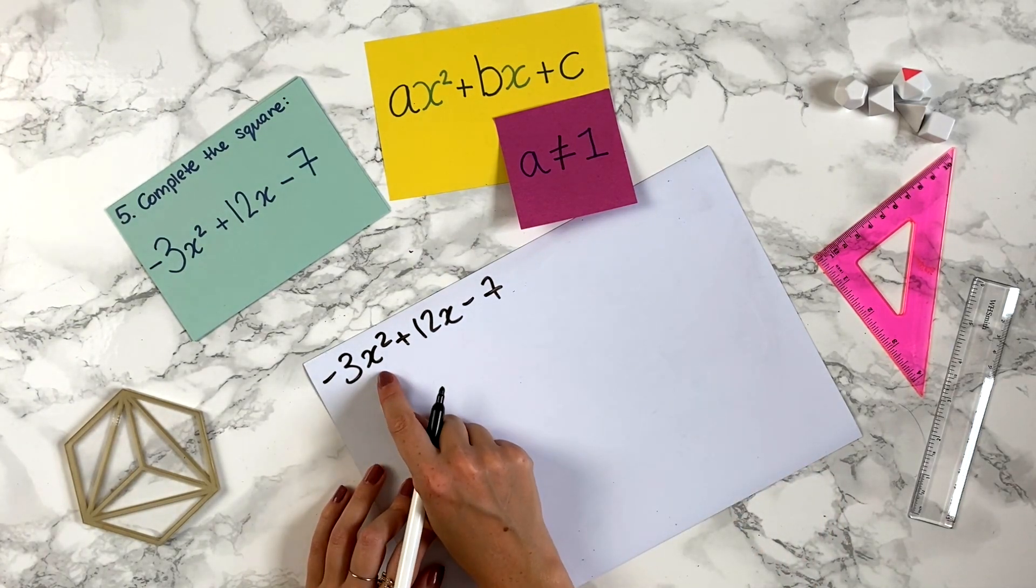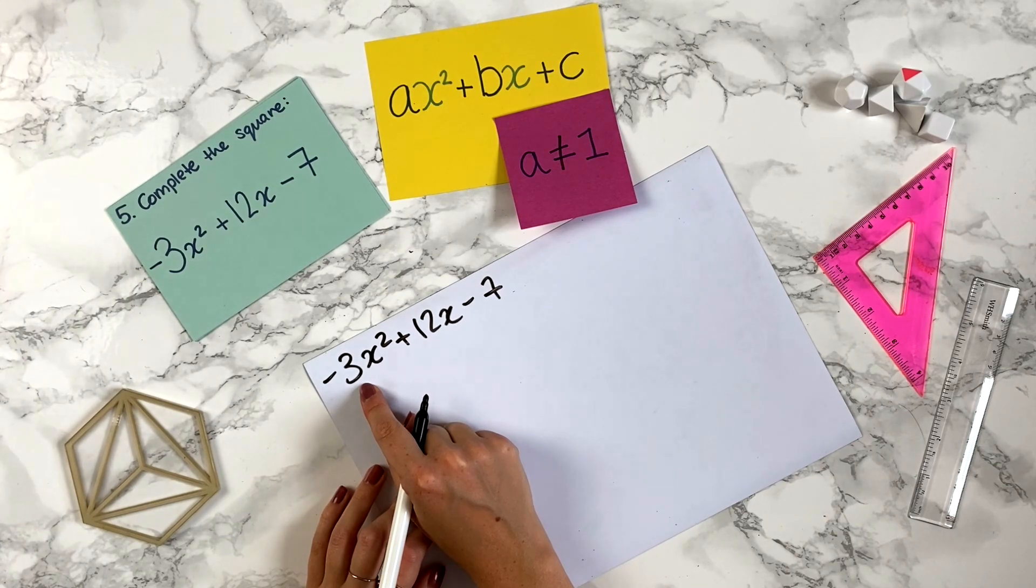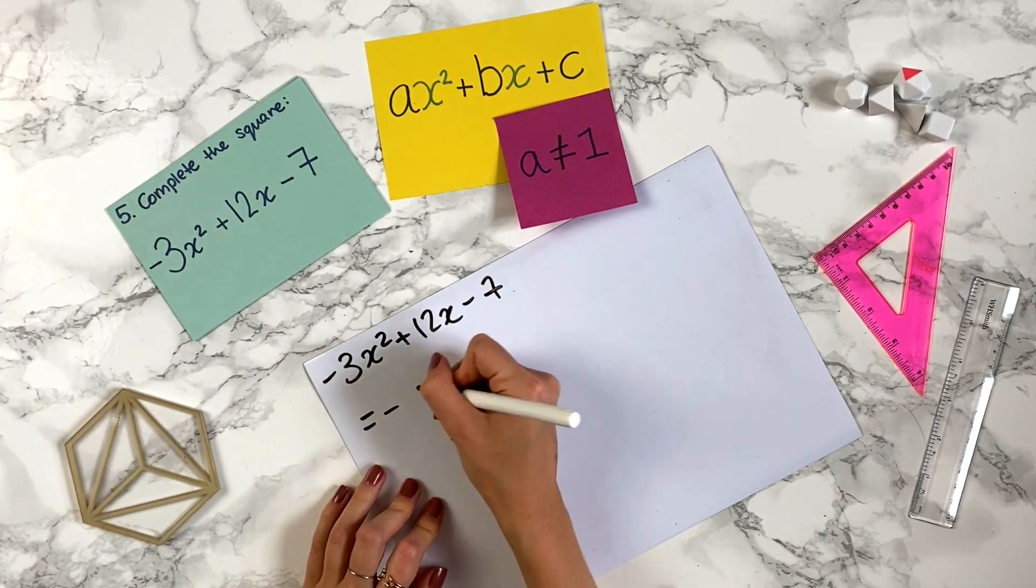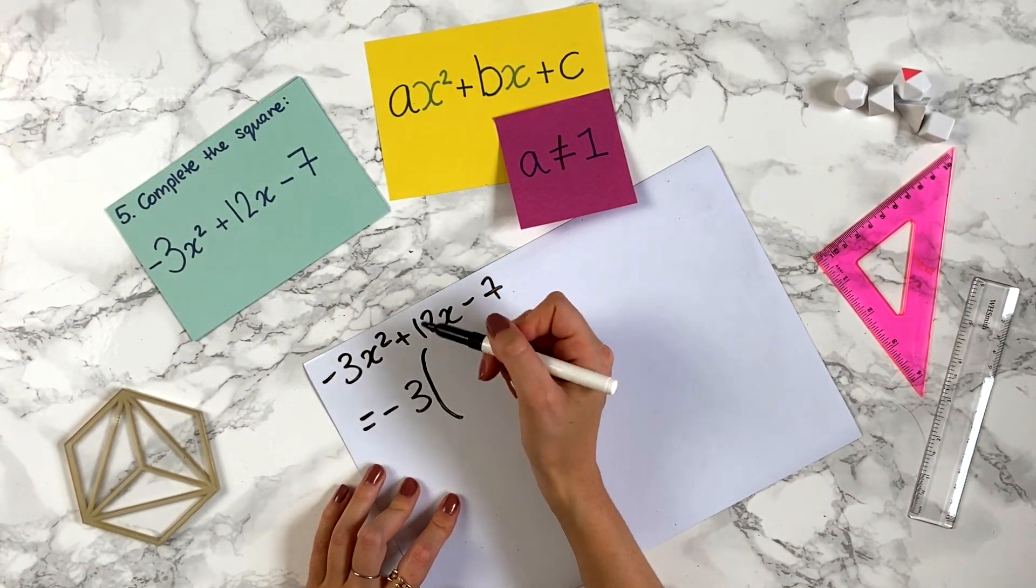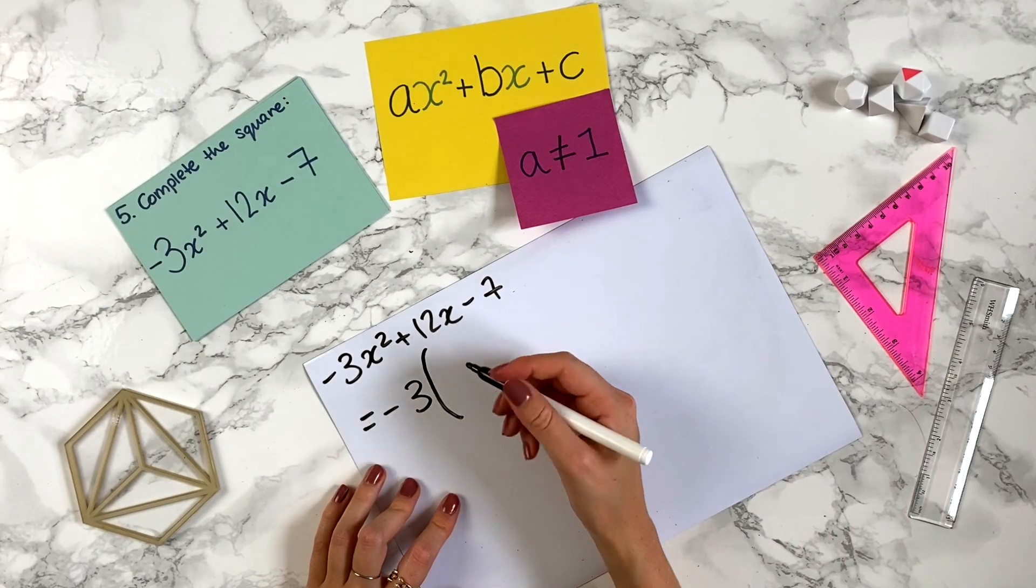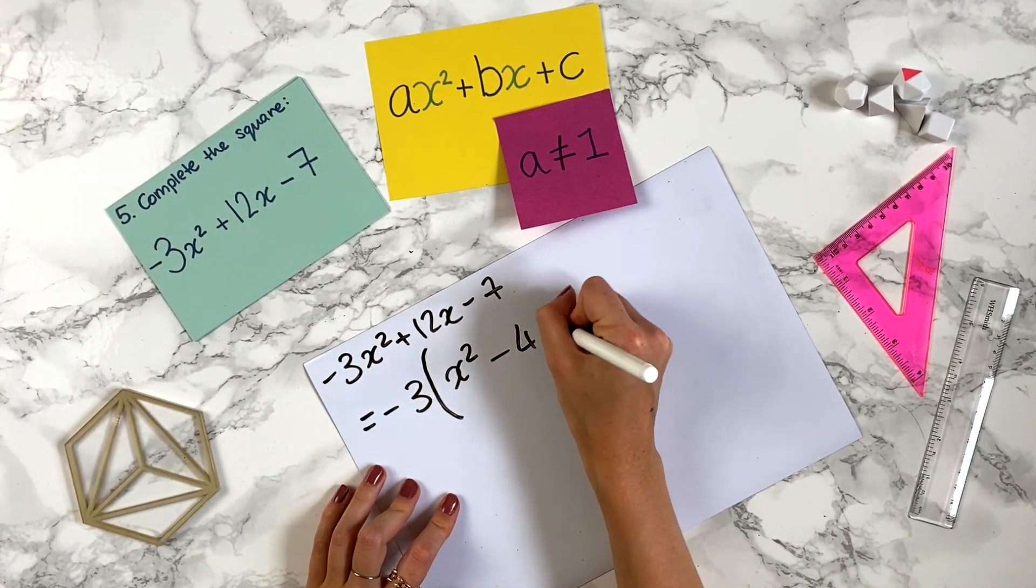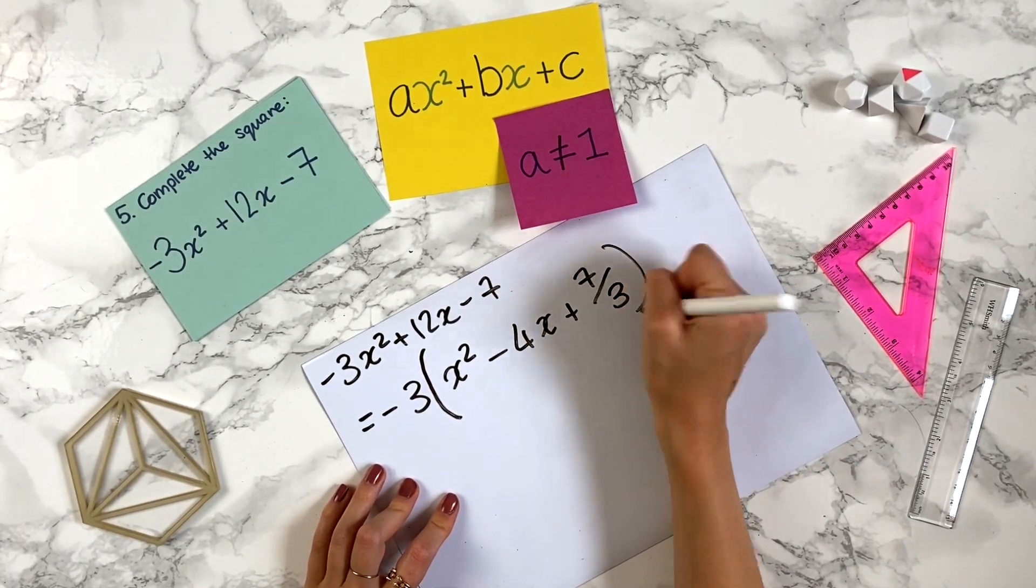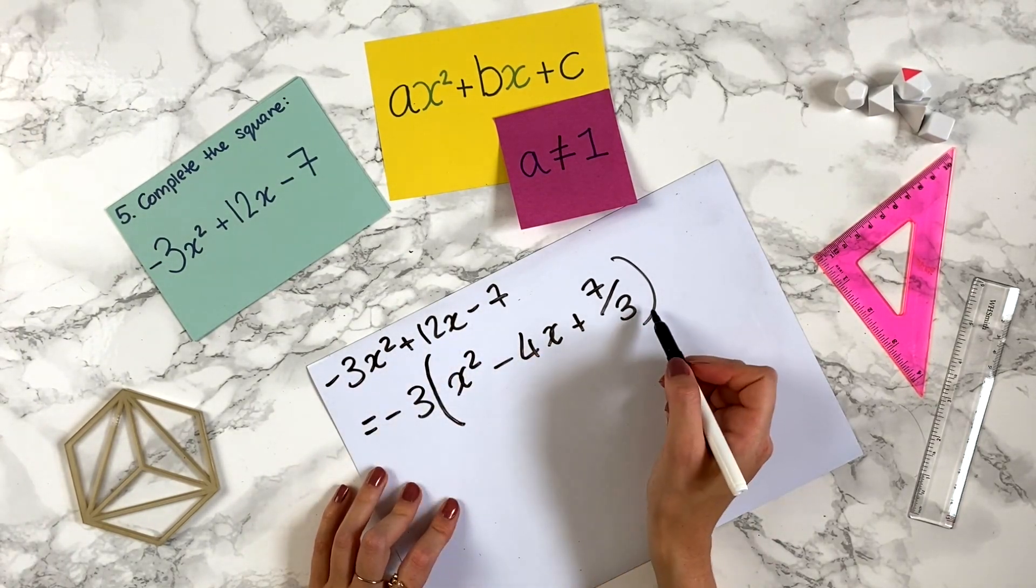So we want to just have 1 in front of the x squared to use our method, so we can take out minus 3. So if we put minus 3 outside the brackets we're dividing everything here by minus 3 now, so we can write x squared minus 4x plus 7 over 3. So just take a moment to make sure you're happy that this line is the same as this.